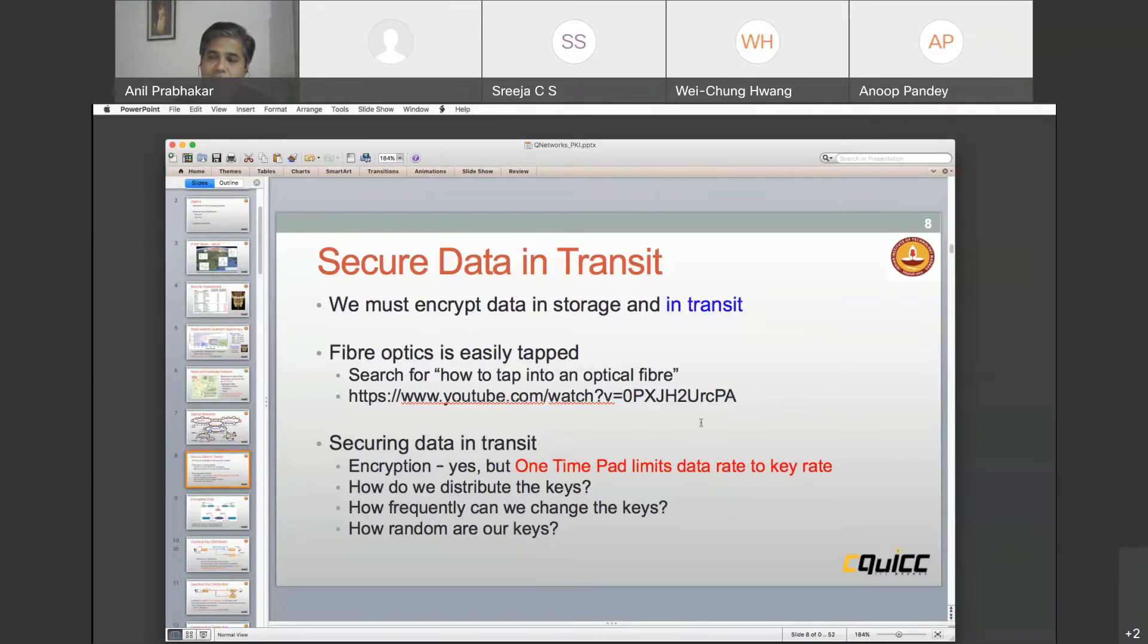The only really, truly secure way of encrypting and transmitting data is using one-time pad. But one-time pad requires that the data rate and the key rates be equal. When China does this demonstration, it actually stores keys and then uses the one-time pad to encrypt a video. So the question that we have to ask is: how do we distribute the keys? How frequently can we change the keys and how random are our keys?